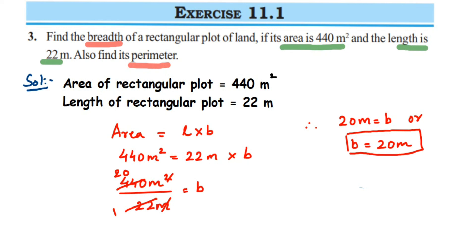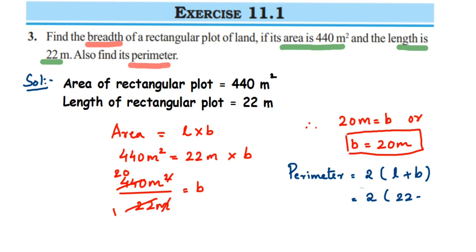Now we have breadth equal to 20 meter, so we substitute into the perimeter formula. Perimeter of rectangle equals 2 into l plus b. We know length is 22 meter and breadth is 20 meter, so perimeter equals 2 into 22 plus 20, which is 2 into 42, giving us 84 meter.